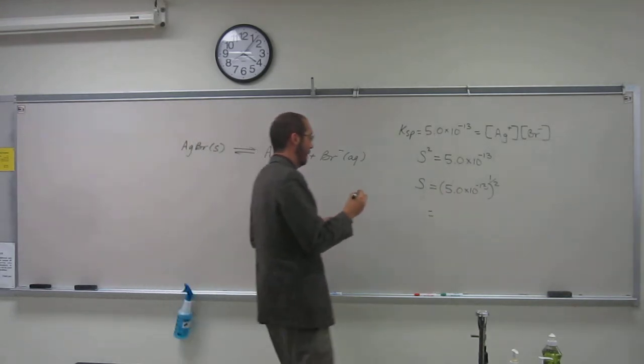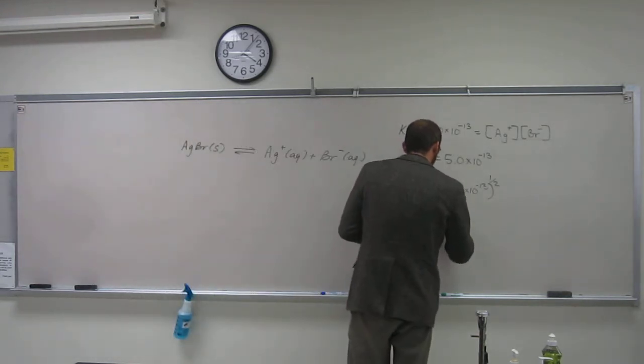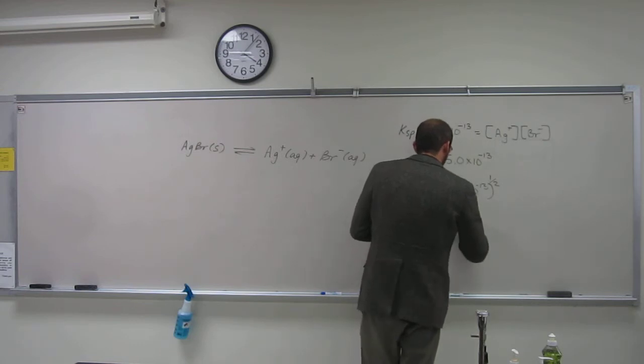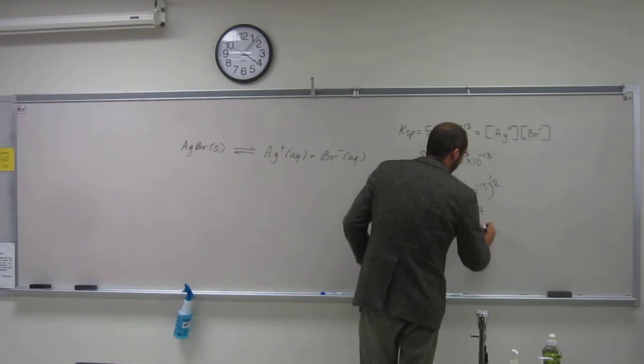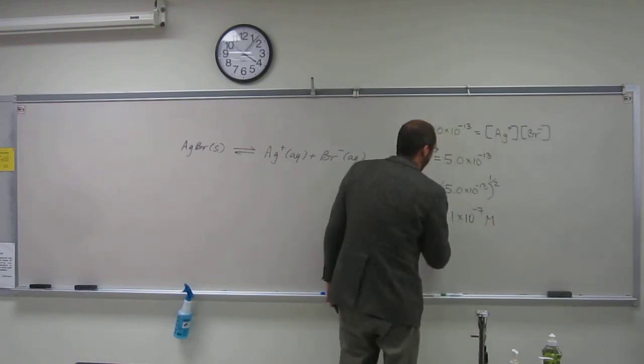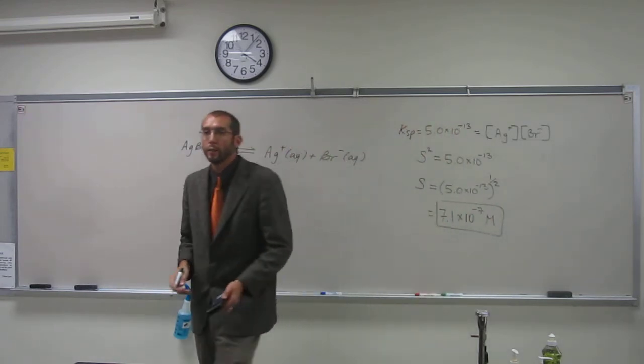And then when I get my answer, the solubility of silver 1 bromide in water is going to be 7.1 times 10 to the negative 7 moles per liter, whatever you'd like to accept.